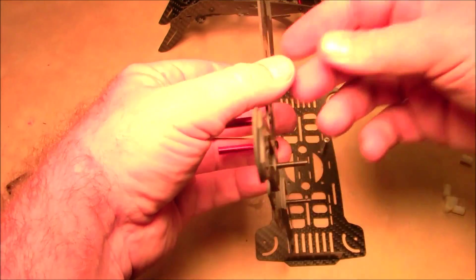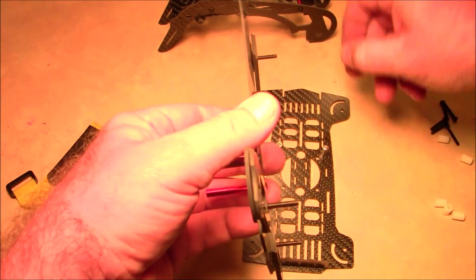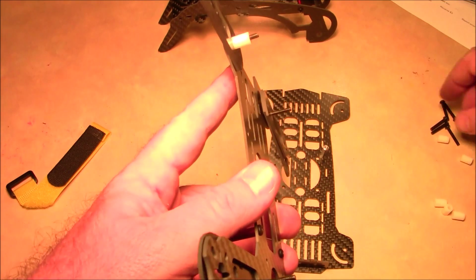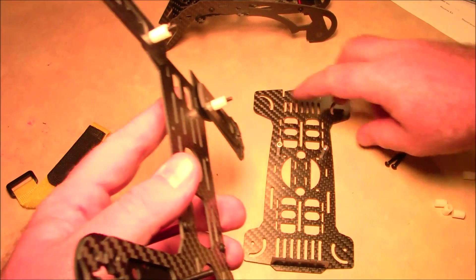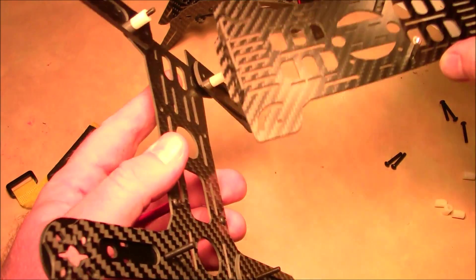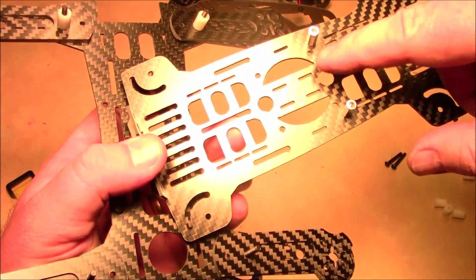So once you have it this far, these spacers are what go on here onto these screws to hold them apart so that they don't rest on the bottom plate. And actually on this very bottom plate is where you're supposed to put your flight board.